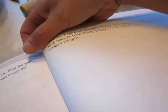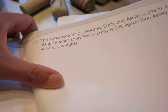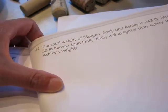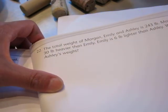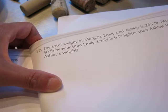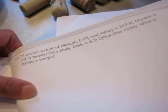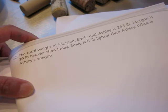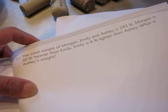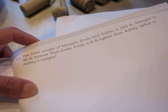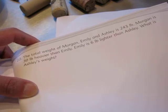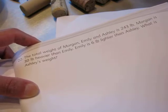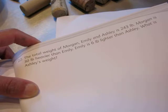Hello dear friends, here is another very simple math problem. The total weight of Morgan, Emily and Ashley is 243 pounds. Morgan is 30 pounds heavier than Emily. Emily is 6 pounds lighter than Ashley. What is Ashley's weight?